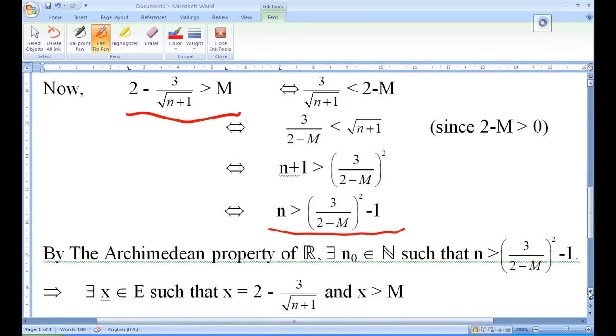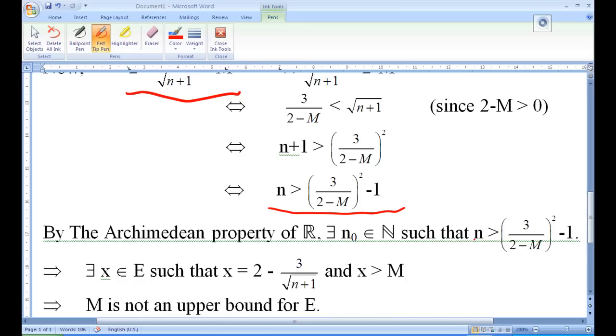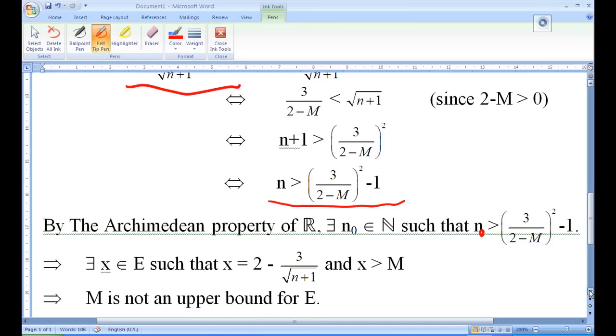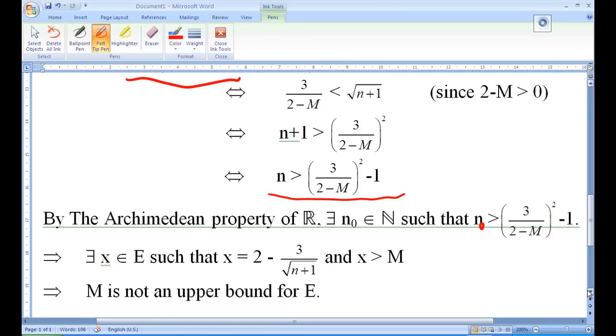This can be found by the Archimedean property of real numbers. We say that if you have any real number, there is always an integer n zero such that n zero is greater than 3 over 2 minus M square minus 1. So in that case, we have found our number x here, where x equal to 2 minus 3 over square root of n plus 1, and x is a number greater than M, inside E and x greater than M. Therefore, the number M is not an upper bound for E.